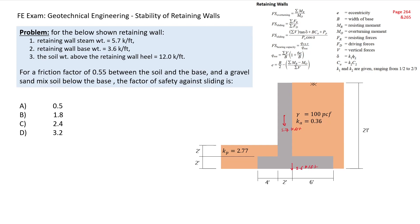The soil weight above the retaining wall heel is 12 kip per foot — this is our heel and the weight of the soil on top of that heel is 12 kip per foot. Knowing that the friction factor between the soil and the base is 0.55, and a gravel-sand mix soil below the base, find the factor of safety against sliding.